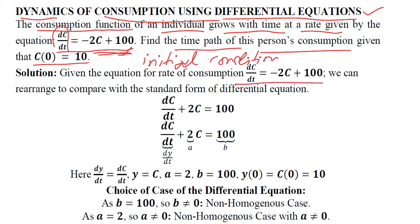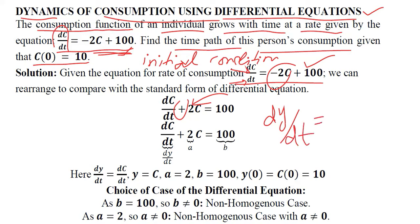Extracting the given differential equation — which shows the rate of change of consumption with respect to time — it is not in standard form, because in the standard form the variable C term appears on both the left and right hand sides. So we have shifted it to the left hand side where it is now positive. Now it is comparable with the standard form, which is dy/dt + ay = b.